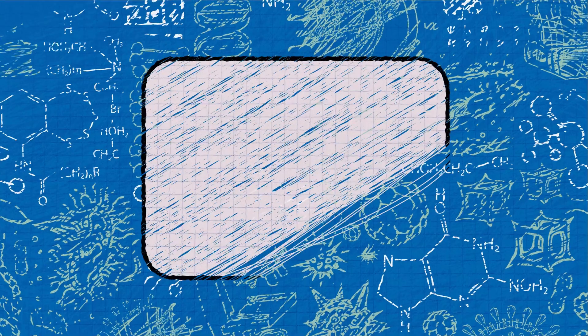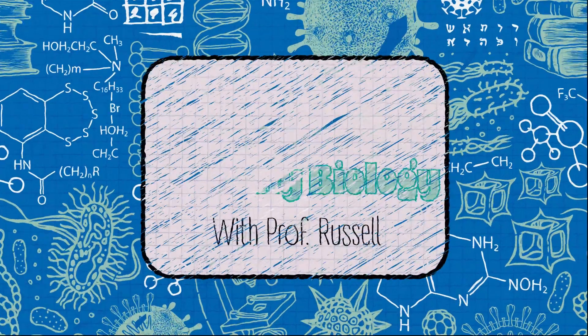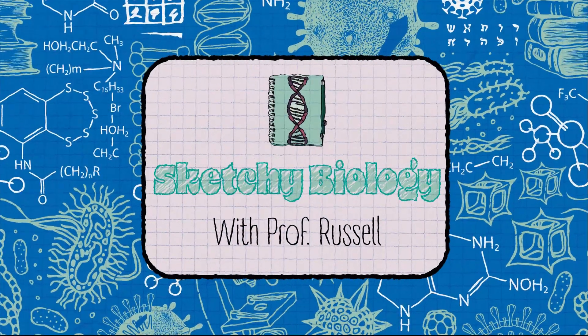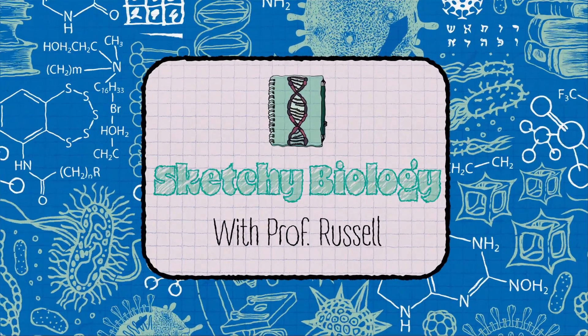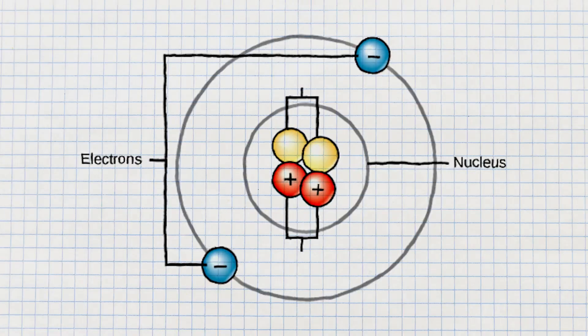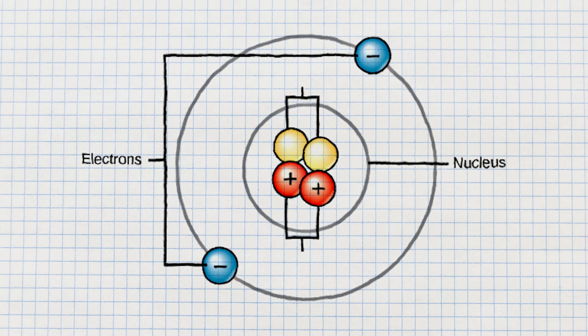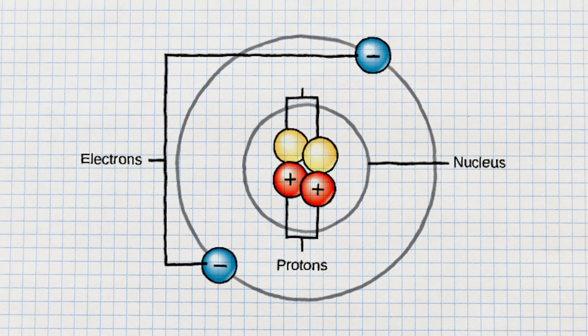All living things are built from these same fundamental components — the atom. Each atom has a dense core called the nucleus, where we find two particles: the protons and the neutrons.